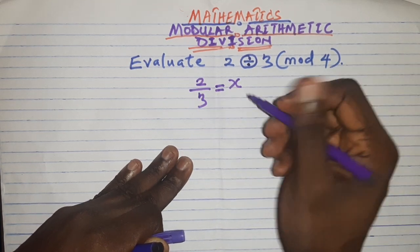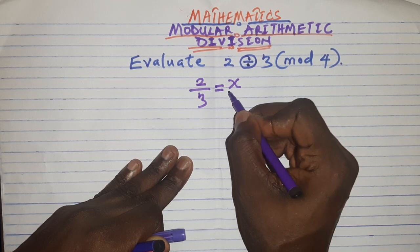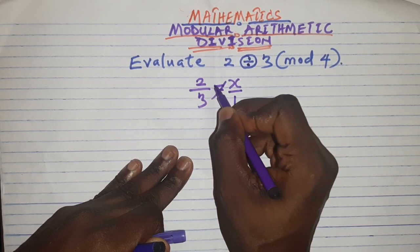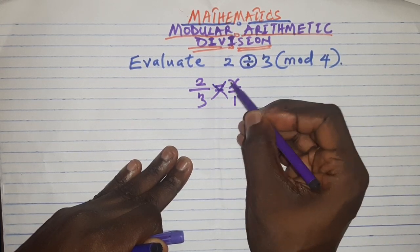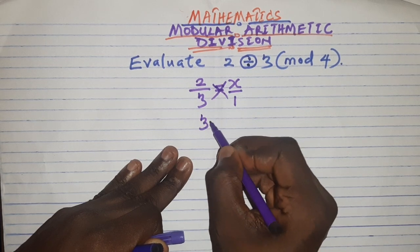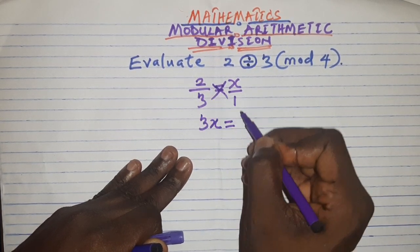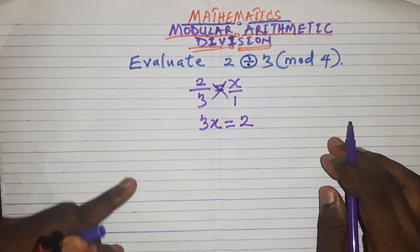Since you equated the division to x, you can cross multiply. You can put the x over 1 and then cross multiply. Then 3 times x is 3x equals 2 times 1 is 2.